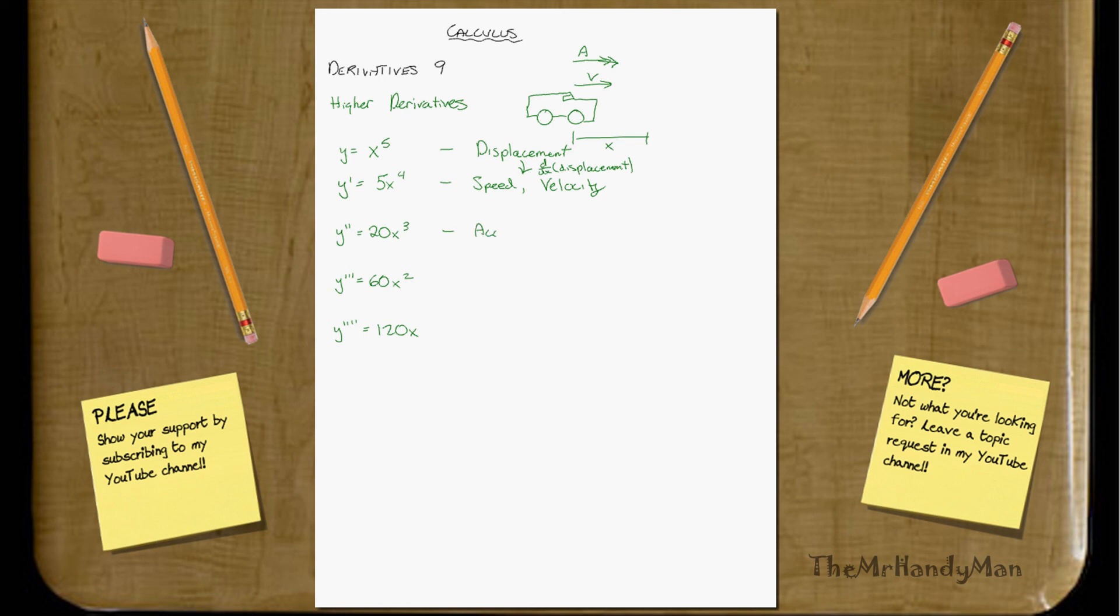And the next thing would be, that would be acceleration, right? Now mind you, this is not only speeding up, but this is also slowing down. Negative acceleration would be slowing down, correct? So d dx of velocity, I'm just going to put v, is equal to acceleration.